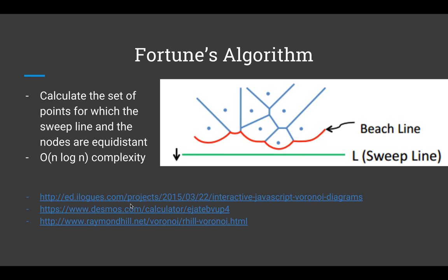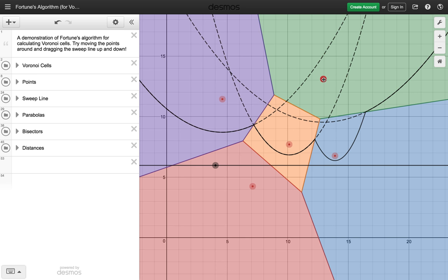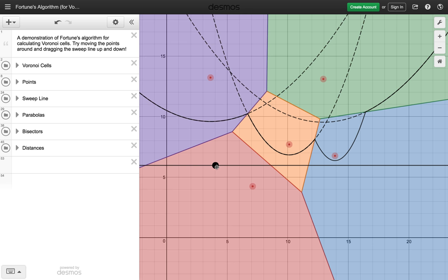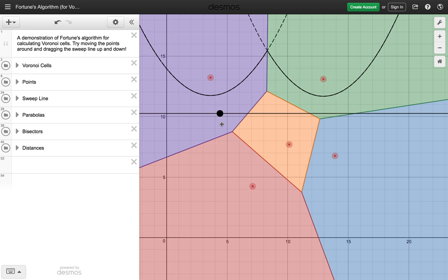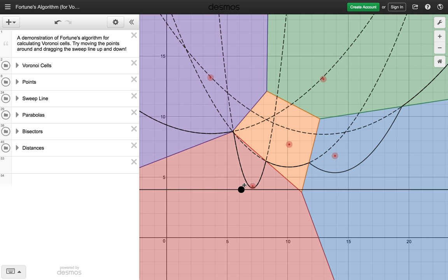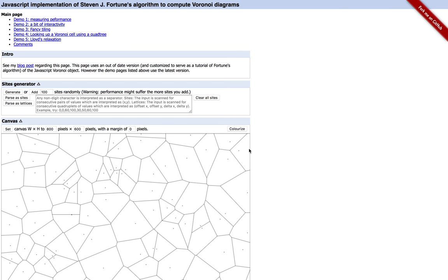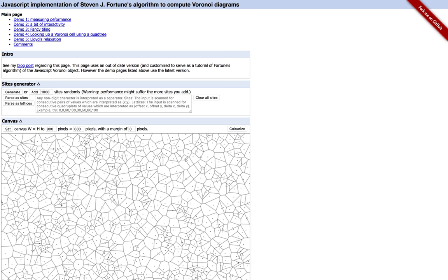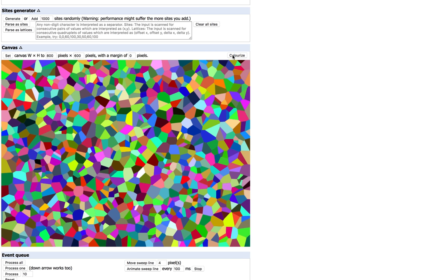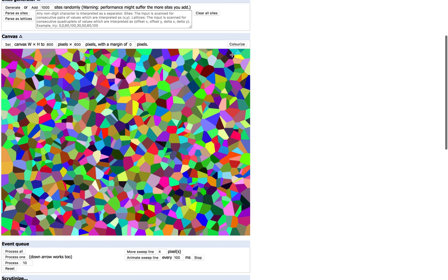There's also this one where you can move the points around and manually move the sweep line to see the beach line take effect at each point. And this one is good for separating them into colors and seeing the distinct areas. Let's make a thousand and colorize them. You can repeatedly color them if you want.